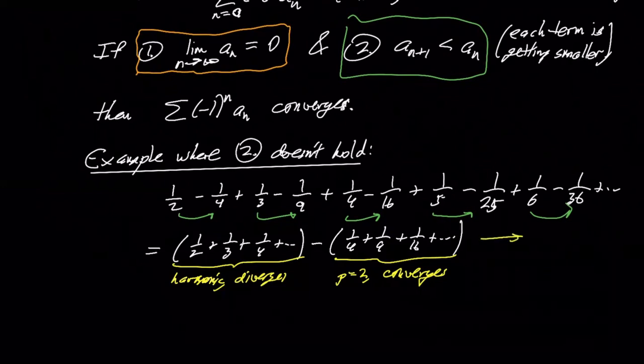And this is the p test with p equals two, so it converges. But if you have something infinite minus something finite, it's still infinite. So this whole thing diverges. And notice what's happening here is that the terms are not getting smaller at each step. Like we actually increase from a quarter to a third, from a ninth back to a quarter, from a sixteenth back to a fifth and so on, right? So this condition doesn't hold.